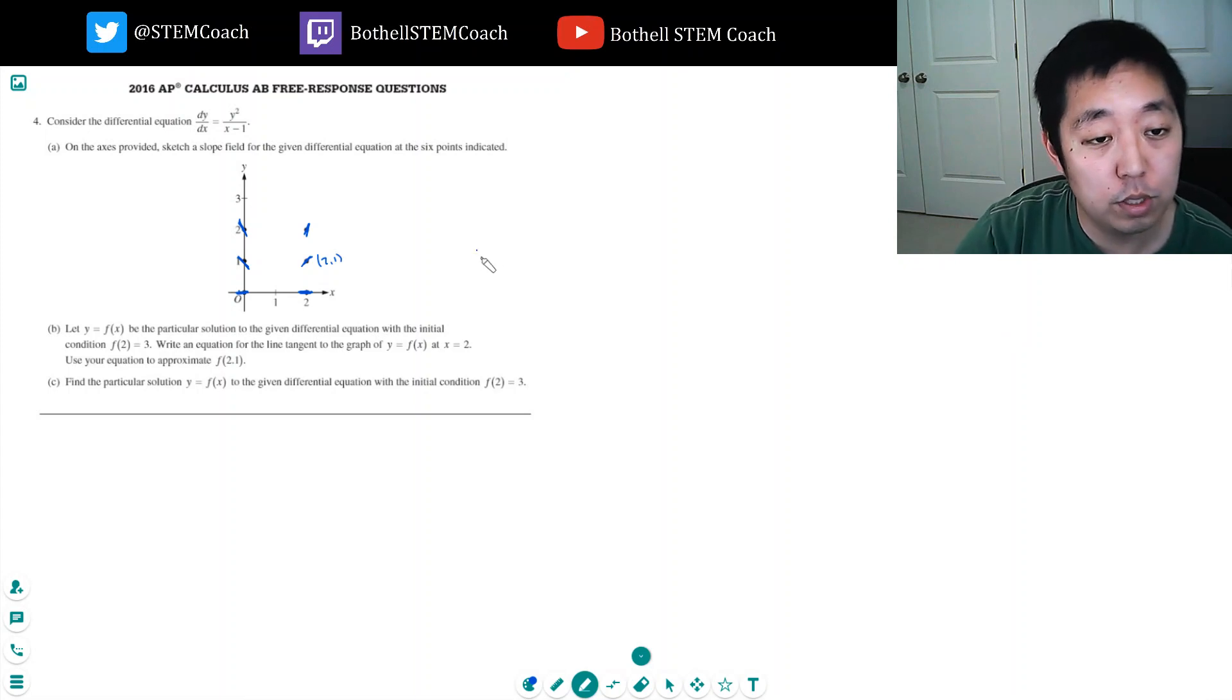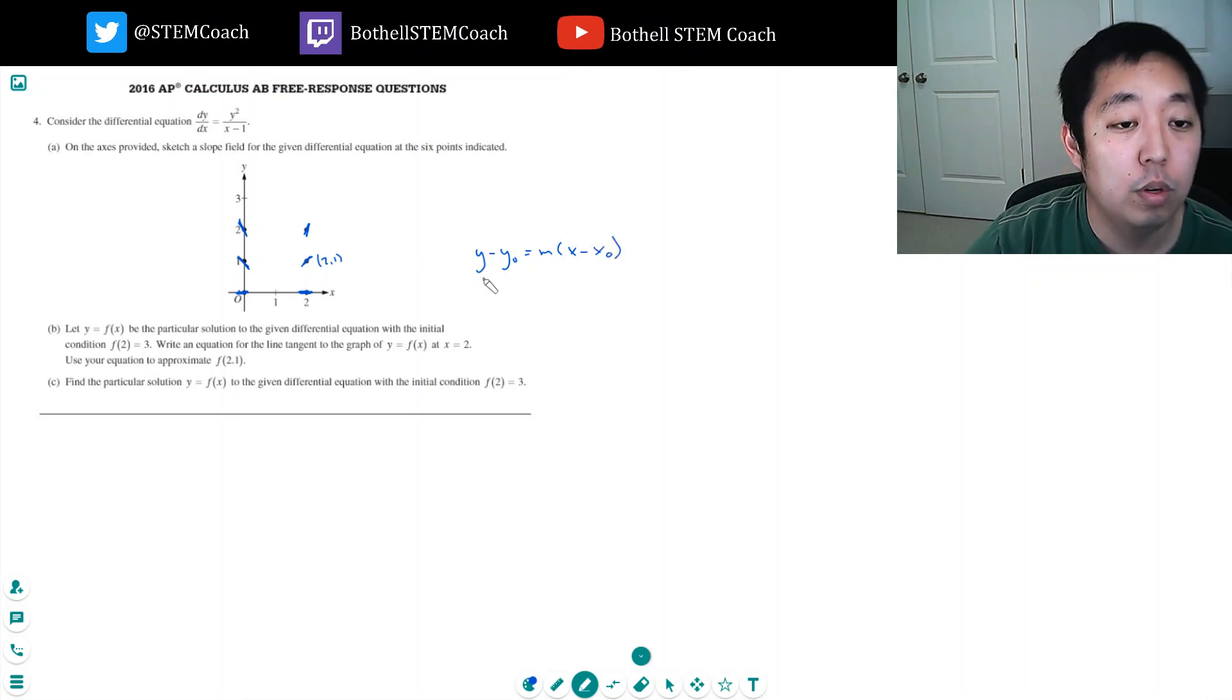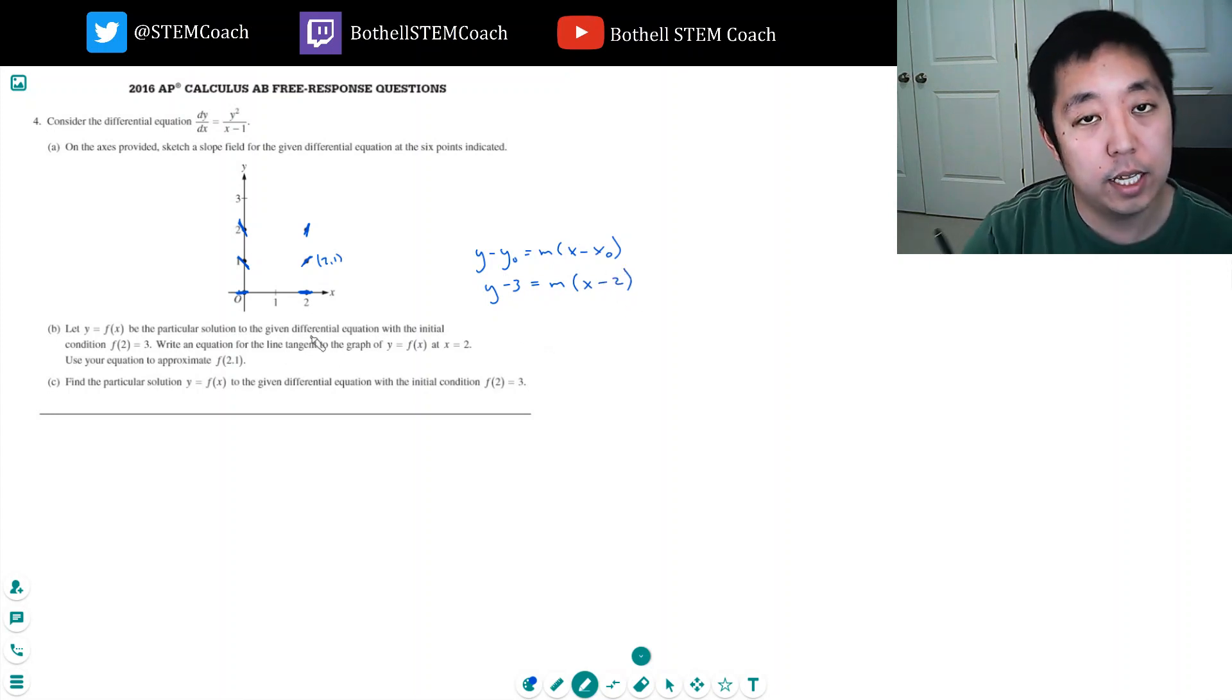What am I going to use? I'm going to use point-slope: y minus y naught equals m times x minus x naught. Now, the point is x equals 2, y equals 3. So y minus 3 equals m times x minus 2, because the tangent line has to go through that point at a minimum. And it also has to have the same slope there.